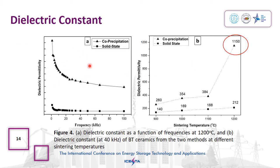Figure 4a is the graph of dielectric constant as a function of frequency at the temperature of 1200 degrees Celsius. We can see that the dielectric constant decreases with increasing frequency. Figure 4b is the dielectric permittivity of the BT ceramic as a function of sintering temperature. The dielectric permittivity of BT from co-precipitation is higher than that of BT from solid state reaction, and the highest value was achieved at a temperature of 1200 degrees Celsius.